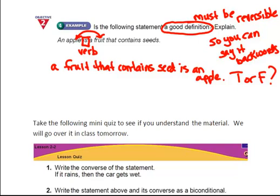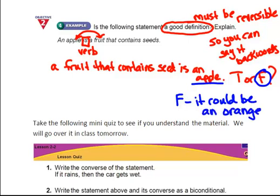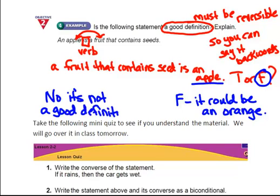A fruit that contains seeds is an apple. Well, this is false. Why? It could be an orange. Because an orange contains seeds. It's a fruit. So this is a false statement. So is this a good definition? No, it's not a good definition.